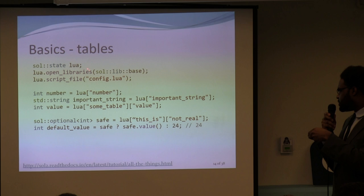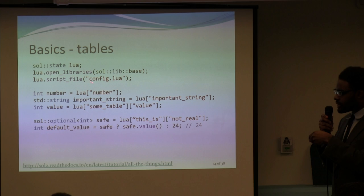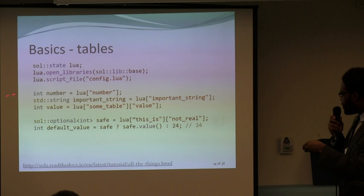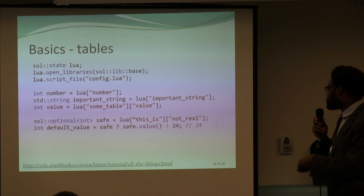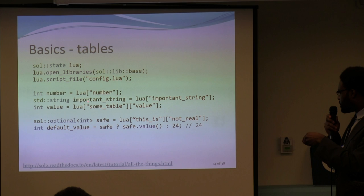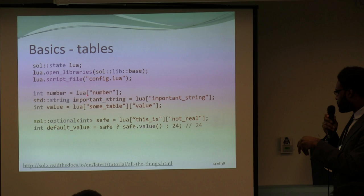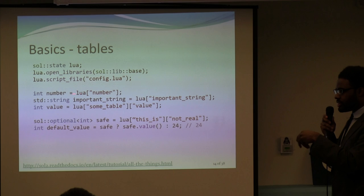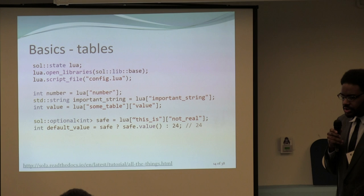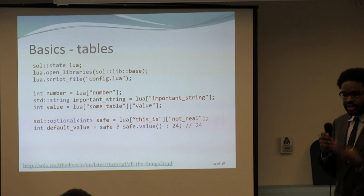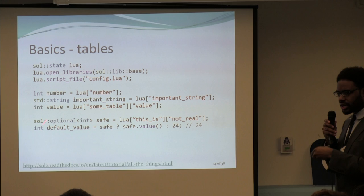What's nice here is that you write 'lua["number"]' and can read out the number immediately — no stack management, no calls to the stack, no finagling. It's just one line, and that's almost exactly the way you would write it in Lua. Same for getting a string — you just write the access. And it supports nesting, so you can access a table and then a value and pull out the actual value. I really like this syntax because it feels a lot like Lua.